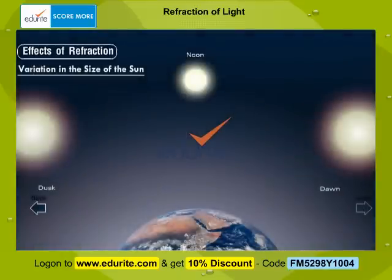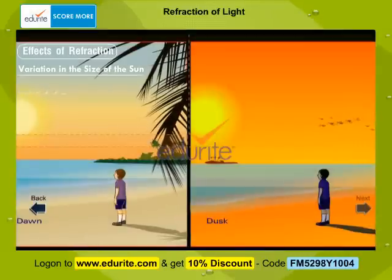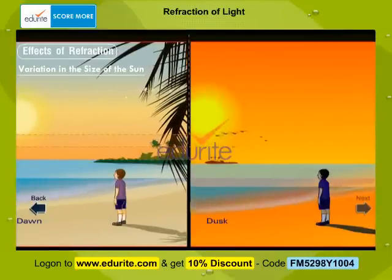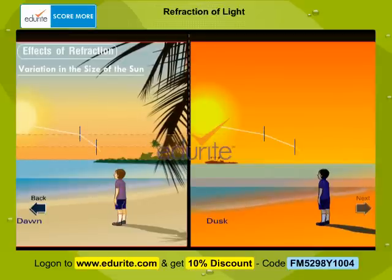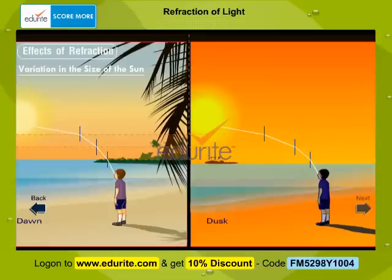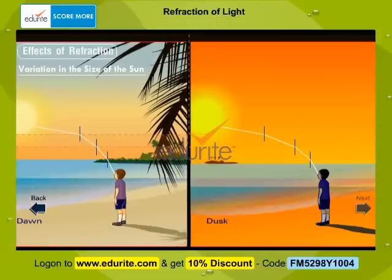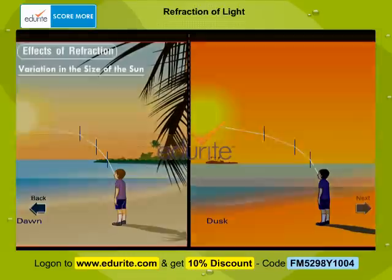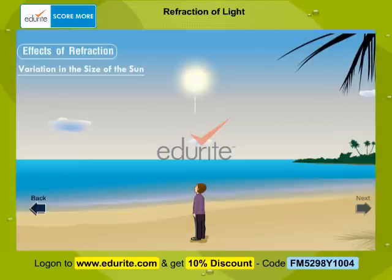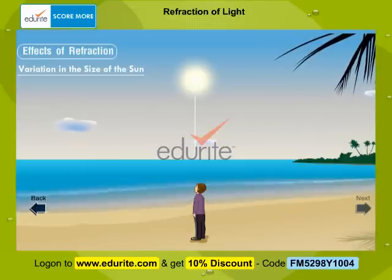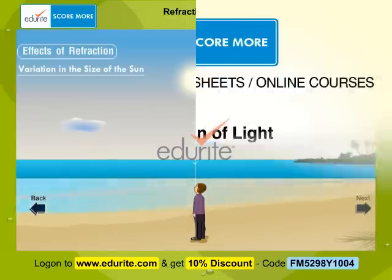At dusk or dawn, the sun appears to be larger than at noon. This is because when the sun is near the horizon, the rays of light coming from the sun have to pass through layers of air of increasing density. Due to continuous bending of light, the sun appears to be larger. At noon, the sun appears smaller than at dusk or dawn because the rays of light that fall normally on the surface of the earth do not get refracted.